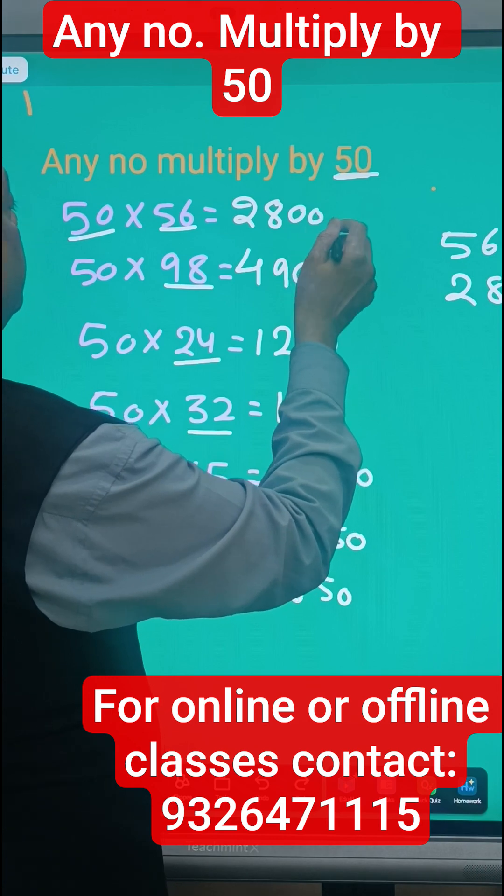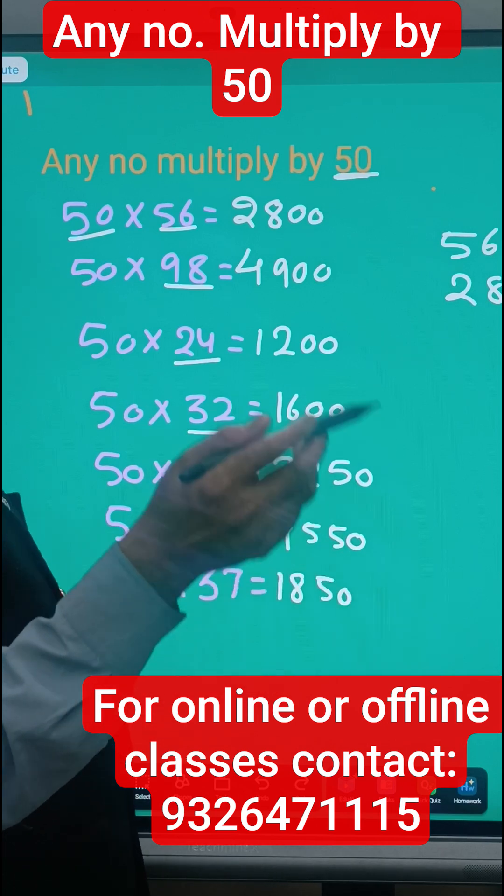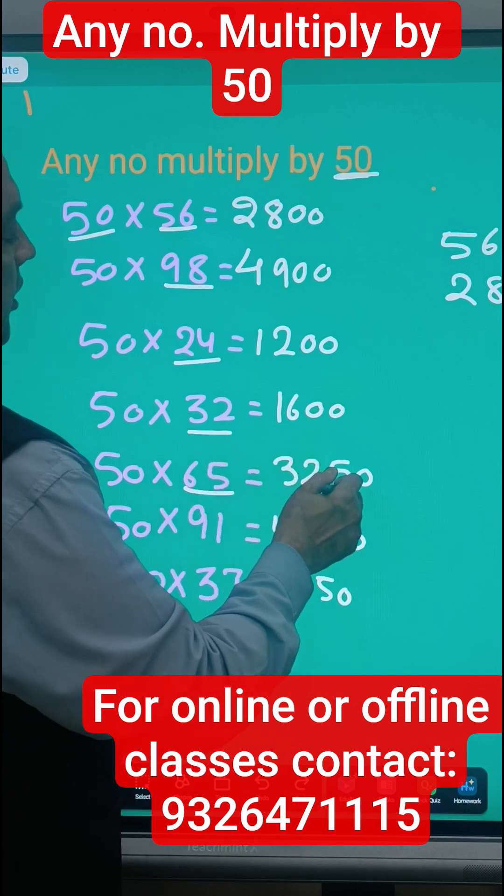If it is odd number given, take the previous number, divide by 2. That means take the half of that number, and then just put the 50 after that.